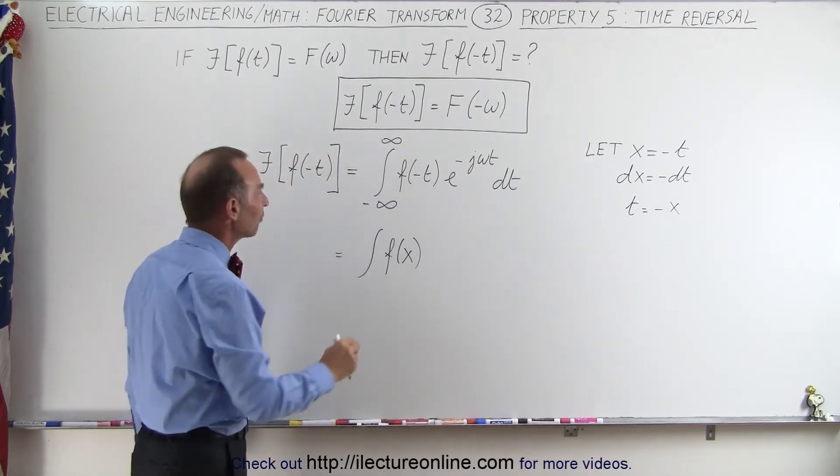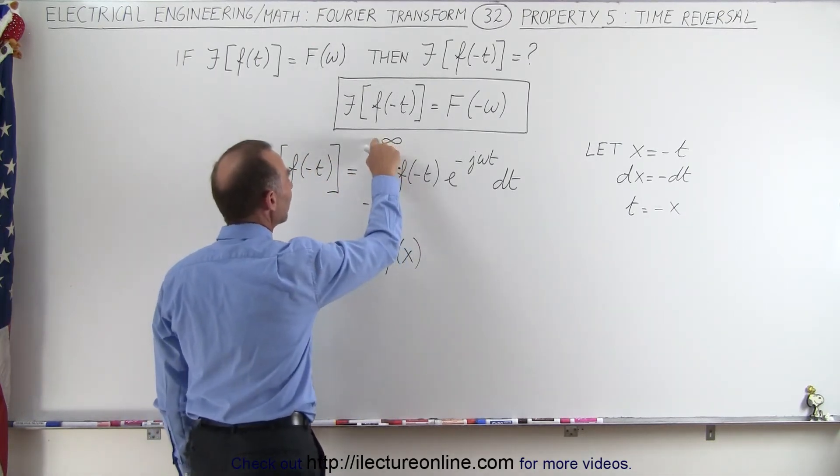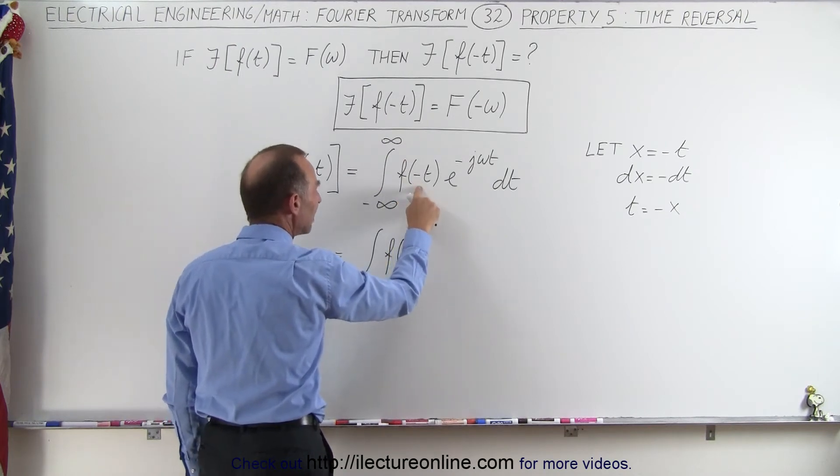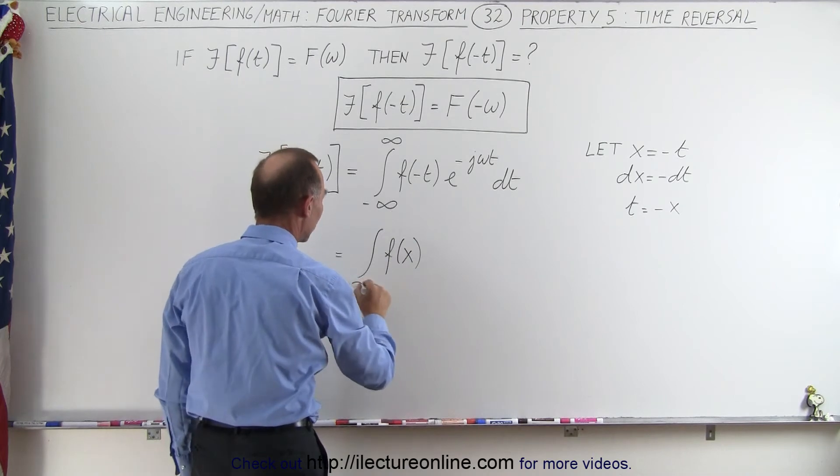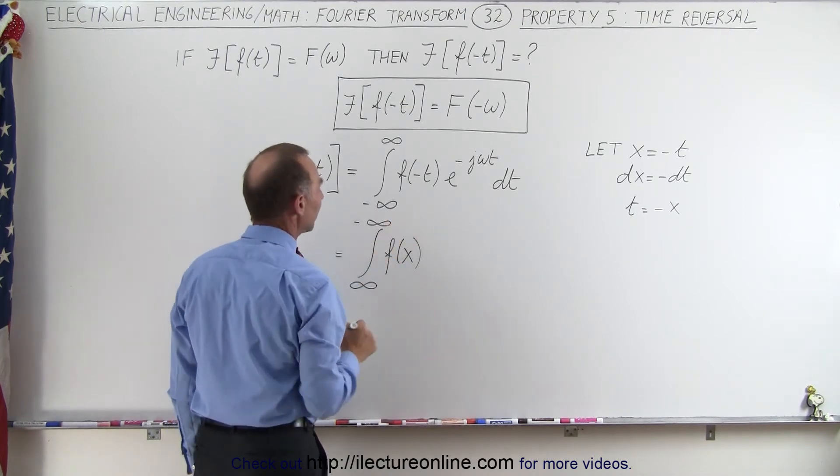Now since the limits went from minus infinity to infinity, when we have the function expressed as negative t, but now we replace it by positive x, we want to switch our limits around. We go from positive infinity to negative infinity.